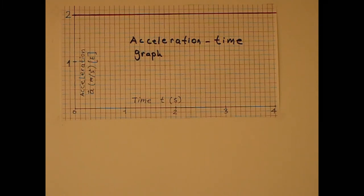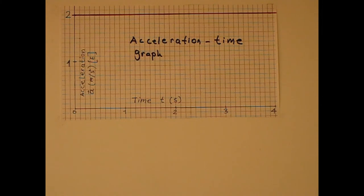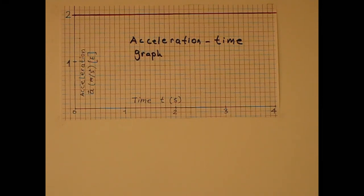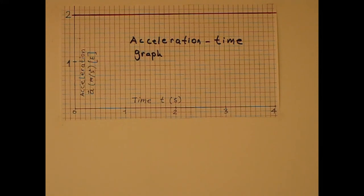In an acceleration-time graph, the area under the line over a given interval gives the change in velocity for that interval.